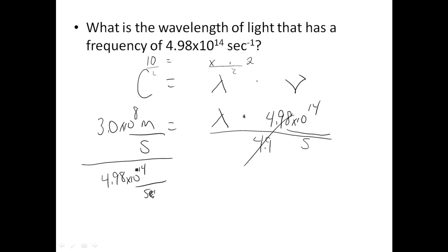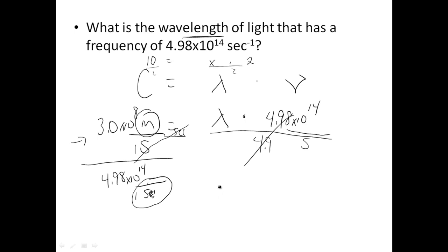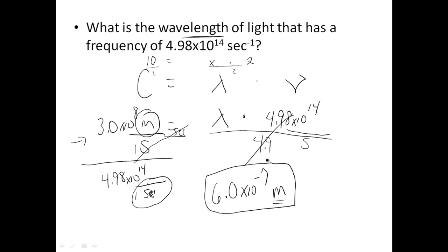When you're dividing a fraction by a fraction, you take the reciprocal. The numbers cancel out, but watch what happens to the units — that per second ends up on top. The seconds cancel, which leaves us with meters — exactly what we want, because we're looking for wavelength and it has to be in the meter family. You do your math: 3.0 times 10 to the 8th divided by 4.98 times 10 to the 14th gives 6.0 times 10 to the negative 7th meters. The problem doesn't ask for nanometers, so just express your answer in meters.